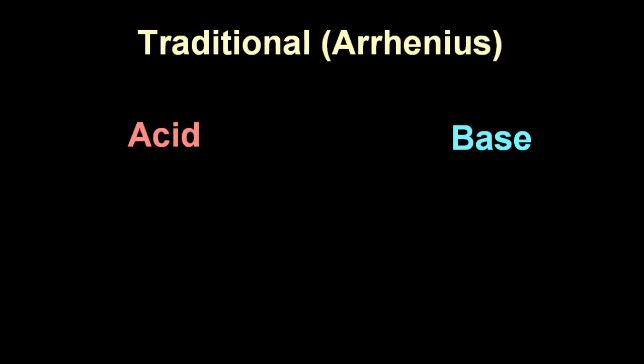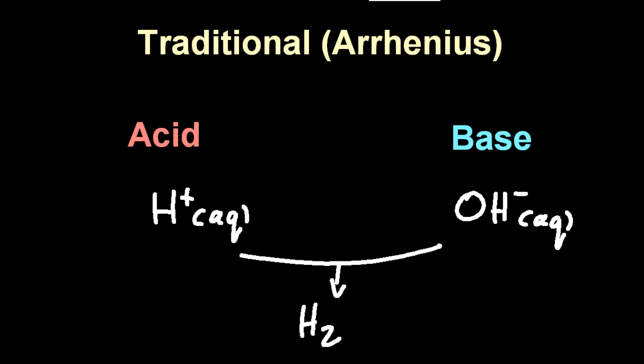So it's hard to talk about Bronsted-Lowry acids and bases without first considering the traditional, or Arrhenius, acid and base. A traditional acid produces H+ aqueous, that is a hydrogen ion in water, and a traditional base produces the hydroxide, or OH- ion, aqueous. And of course, if you react those two together, you will in fact get water.